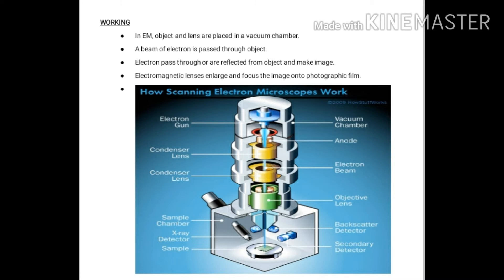Electron gun se electrons emit hote hain. Electrons par negative charge hota hai, anode par positive charge hota hai, aur anode electrons ko apni taraf attract karta hai aur unhe condenser lens ki taraf send karta hai. Condenser lens mein se pass hone par beam of electrons banti hai. Woh beam of electrons green color ke objective lens se pass ho ke specimen par padti hai, aur specimen par padne ke baad screen ki taraf focus kar di jati hai — screen par hum us ka image secure kar sakte hain.